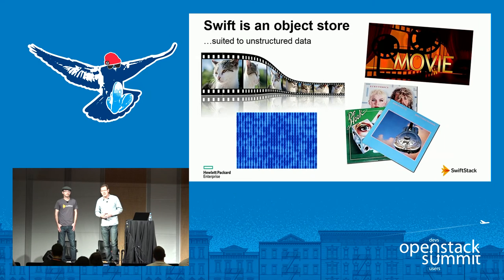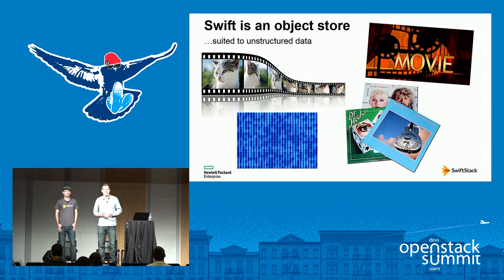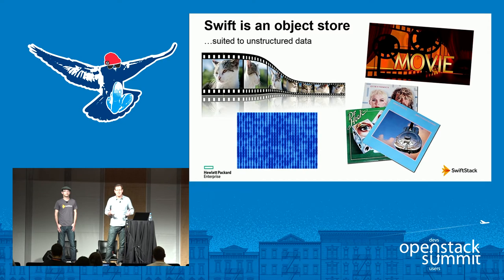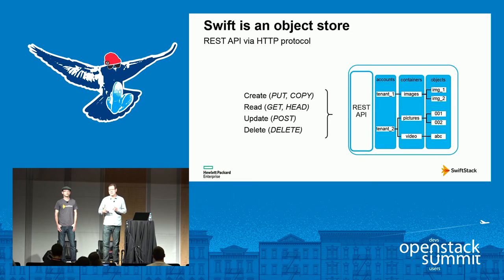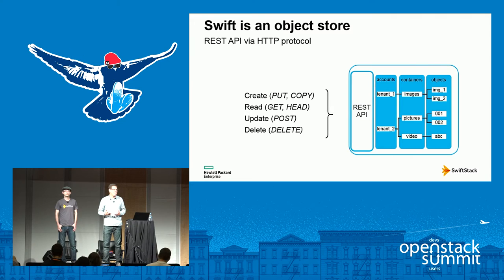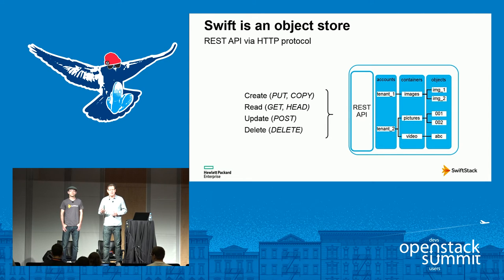Before we get into that detail, particularly for those who may not be familiar with Swift, we're going to give a brief overview of what it is. Swift is an object store, ideal for storing blobs of unstructured data like photographs, movie clips, music, even virtual machine images. Swift has a REST API accessed using HTTP, offering a simple set of CRUD operations — you can create objects using PUTs, read them back, update with POST requests, and delete them through this API.